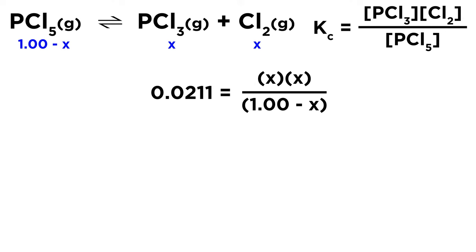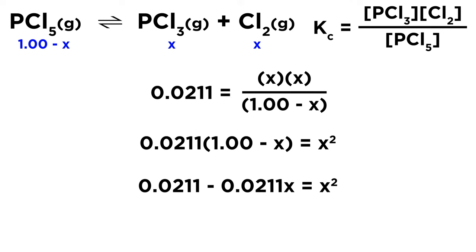So we have our Kc value. That is 0.0211, and then the two products are X and X and then 1.00 minus X on the bottom for PCl5. So now all we have to do is some algebra. We multiply both sides by 1.00 minus X, and then on the right we can take X times X and make that X squared. Then we distribute 0.0211 across that difference, and then we move things around to get this quadratic equation.